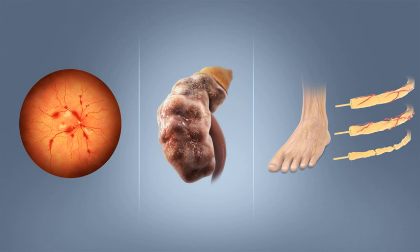Diabetes was one of the first diseases described, with an Egyptian manuscript from c. 1500 BCE mentioning too great emptying of the urine. The Ebers papyrus includes a recommendation for a drink to take in such cases. The first described cases are believed to have been type 1 diabetes. Indian physicians around the same time identified the disease and classified it as madhumeha or honey urine. Noting the urine would attract ants, the term diabetes, or to pass through, was first used in 230 BCE by the Greek Apollonius of Memphis. The disease was considered rare during the time of the Roman Empire, with Galen commenting he had only seen two cases during his career.